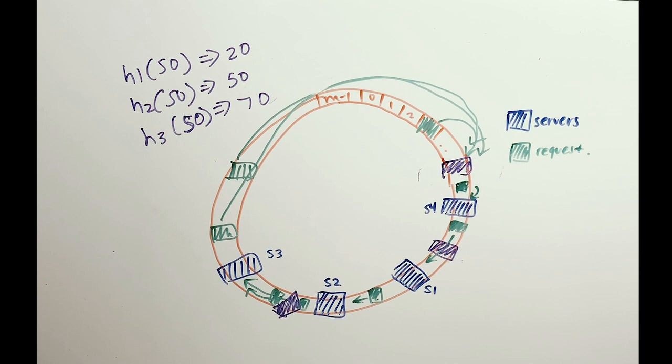Additionally, if one server has more capacity than others, we can put it through a higher number of hashing functions so that it lives in more places along the hash ring. Because it lives in more places, it will serve more requests. And that is virtual nodes. That was a brief introduction to consistent hashing. Thanks for watching.